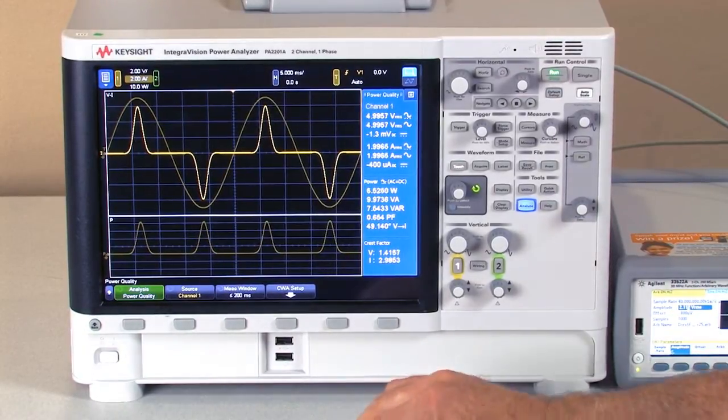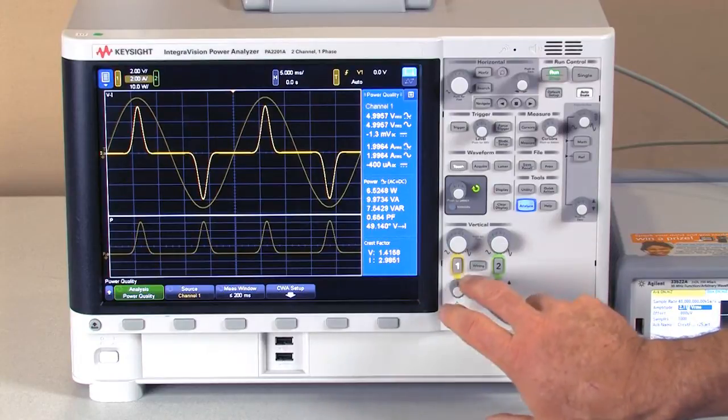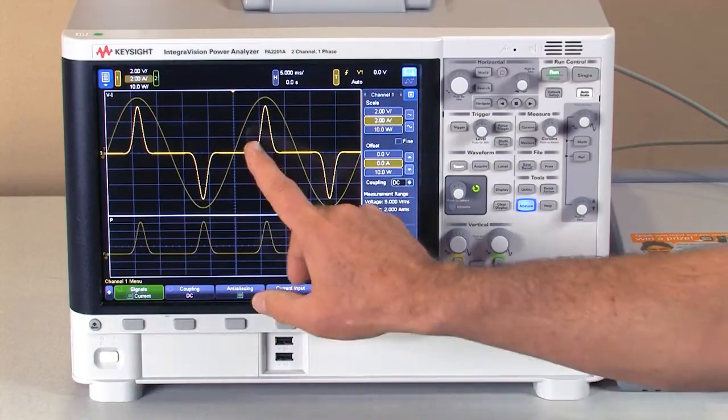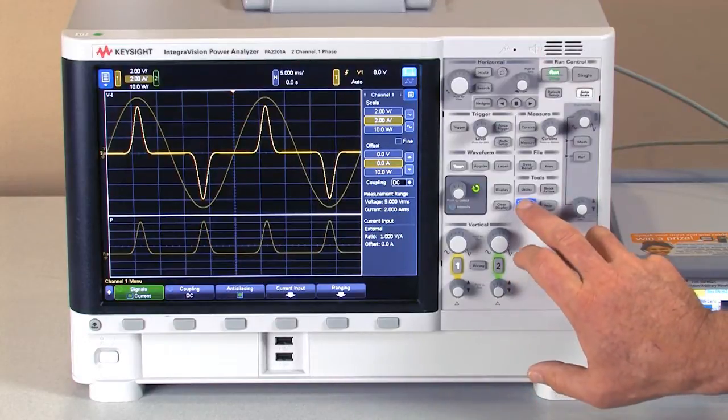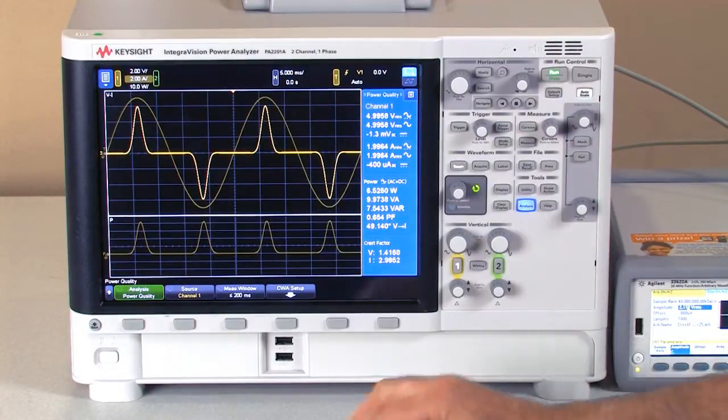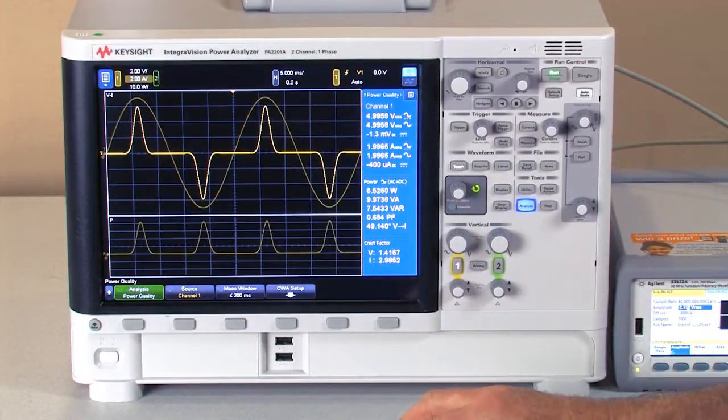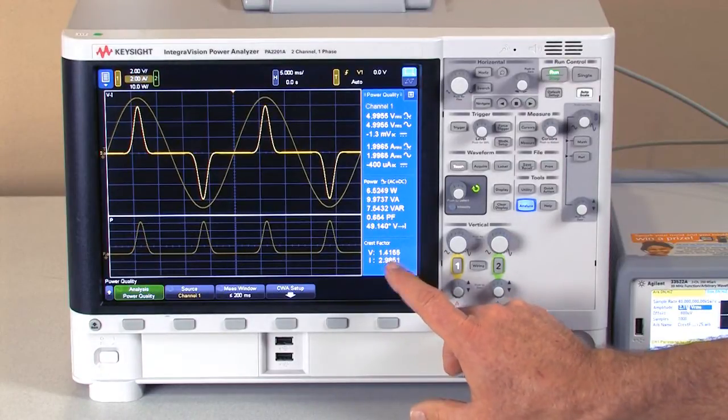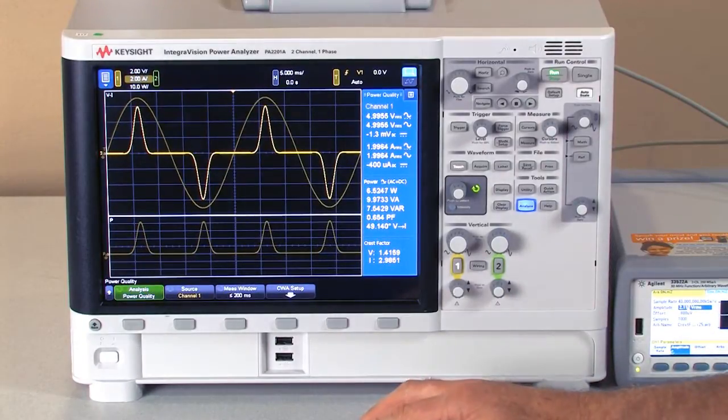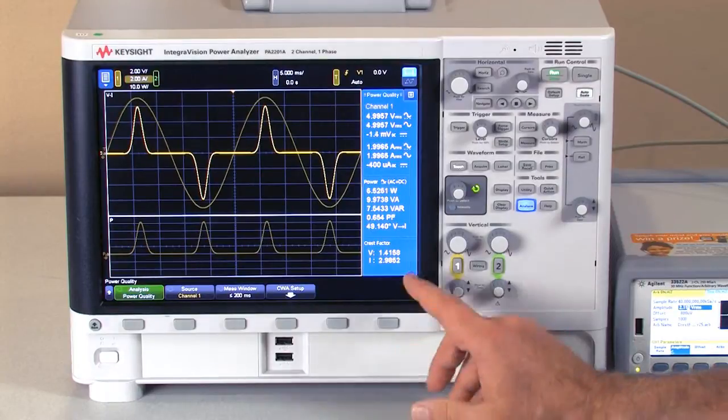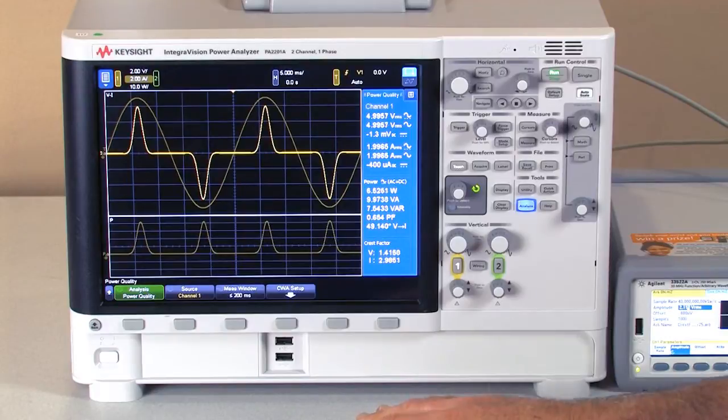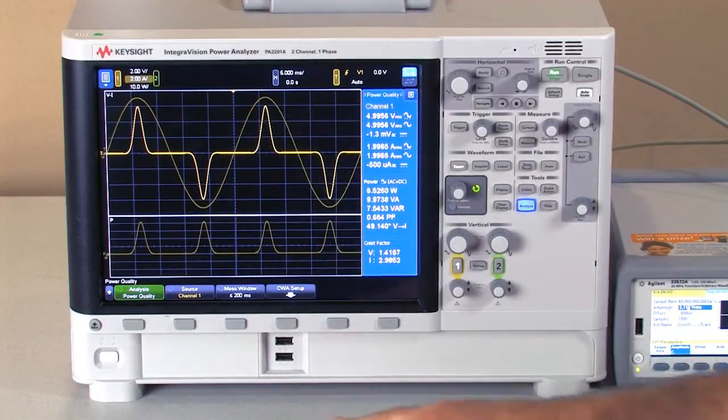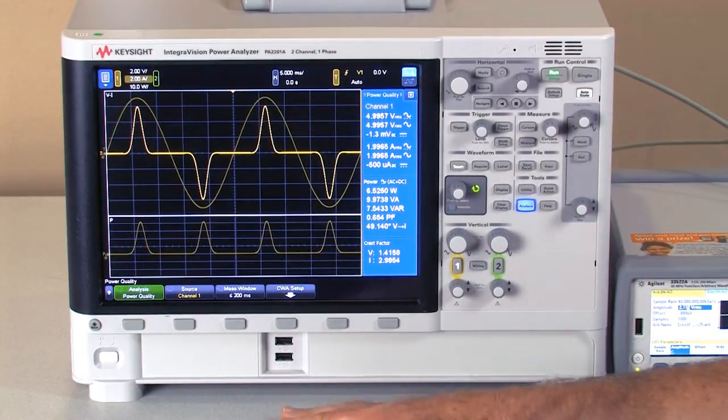So as you can see on this particular setup, I am actually measuring the current waveform on my 2 amp range and I have a full-scale 2 amp signal with a crest factor of 2.985, right at a crest factor of 3, and you can see that on the waveform as the signal just crests at 6 amps peak.